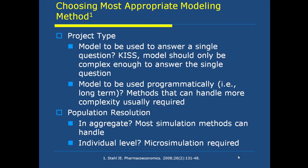Project type: the model should only be complex enough to answer the single question. If the model is to be used programmatically or long term, methods that can handle more complexity are usually required. Population resolution: if we need aggregate population, most simulation methods can handle this; if individual level is needed, microsimulation is required. Interdependencies and feedback: if entity interdependencies are important — such as infection epidemics involving exposure, unexposed, and infected groups — discrete event simulation or agent-based simulations are required.